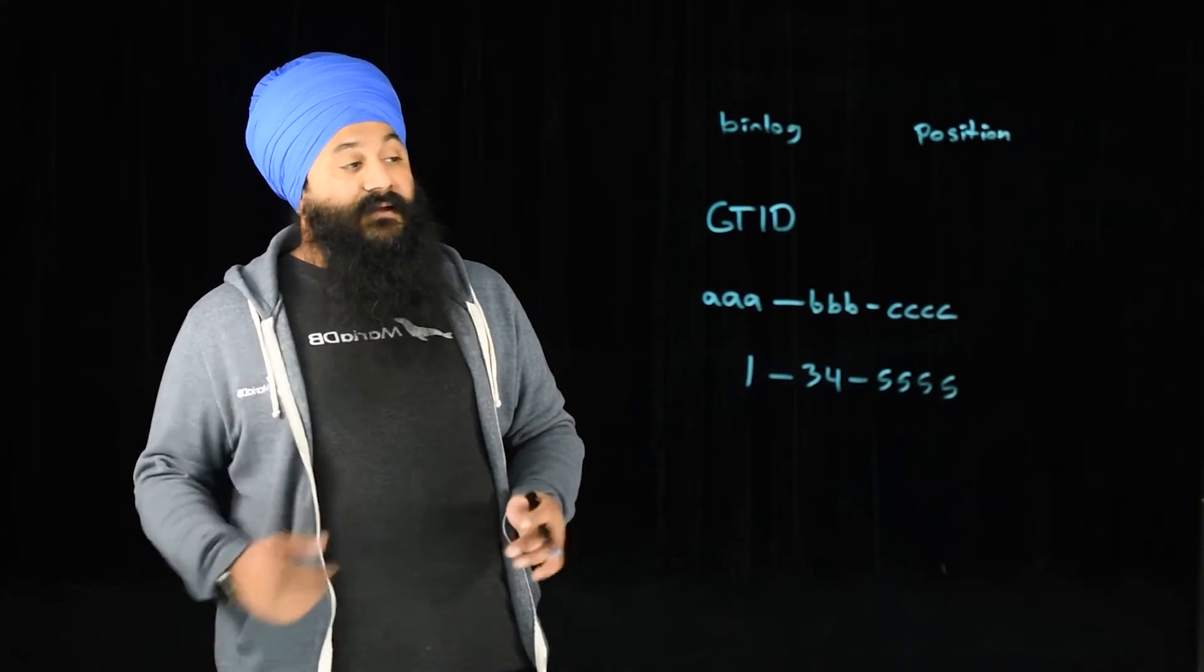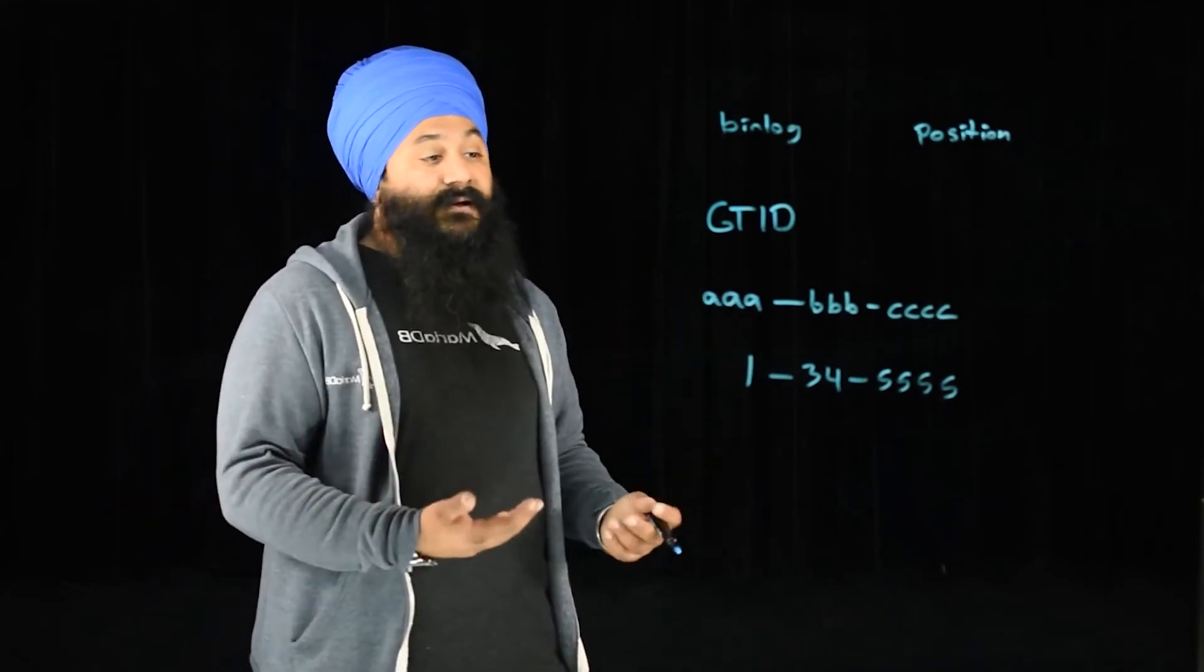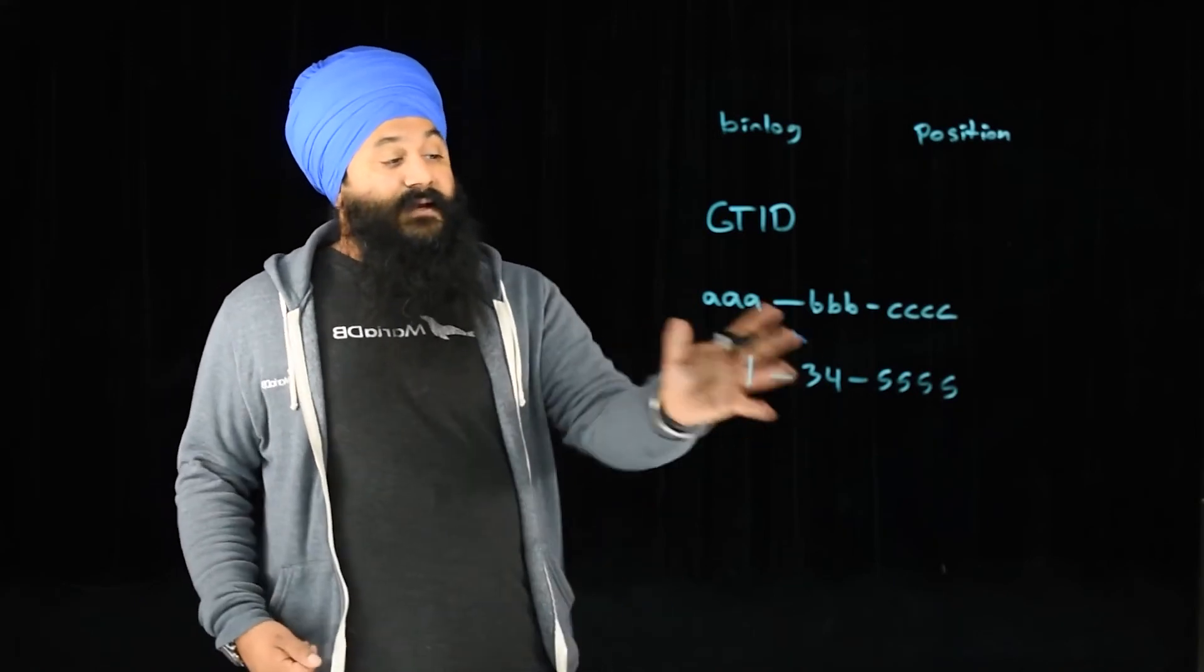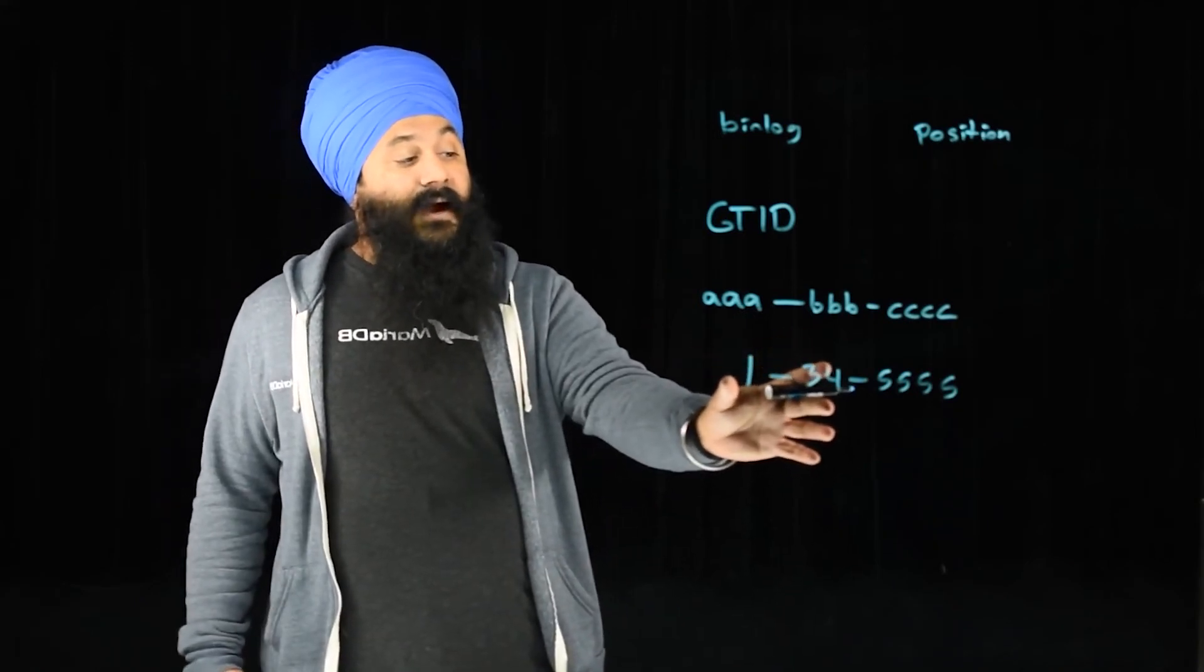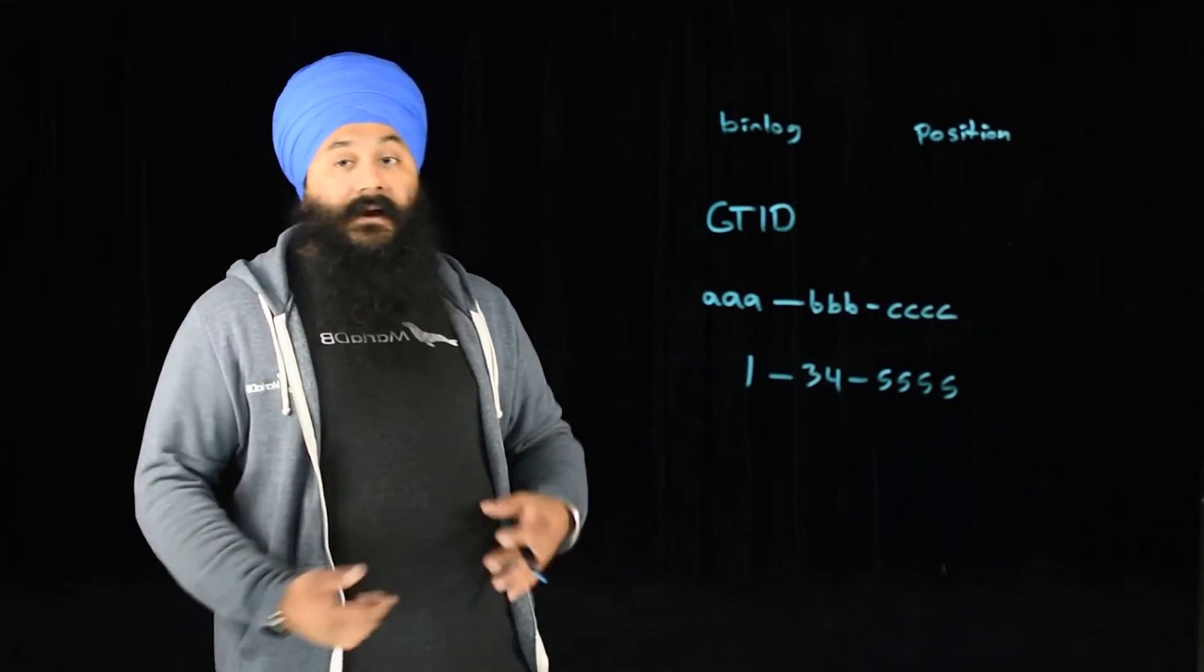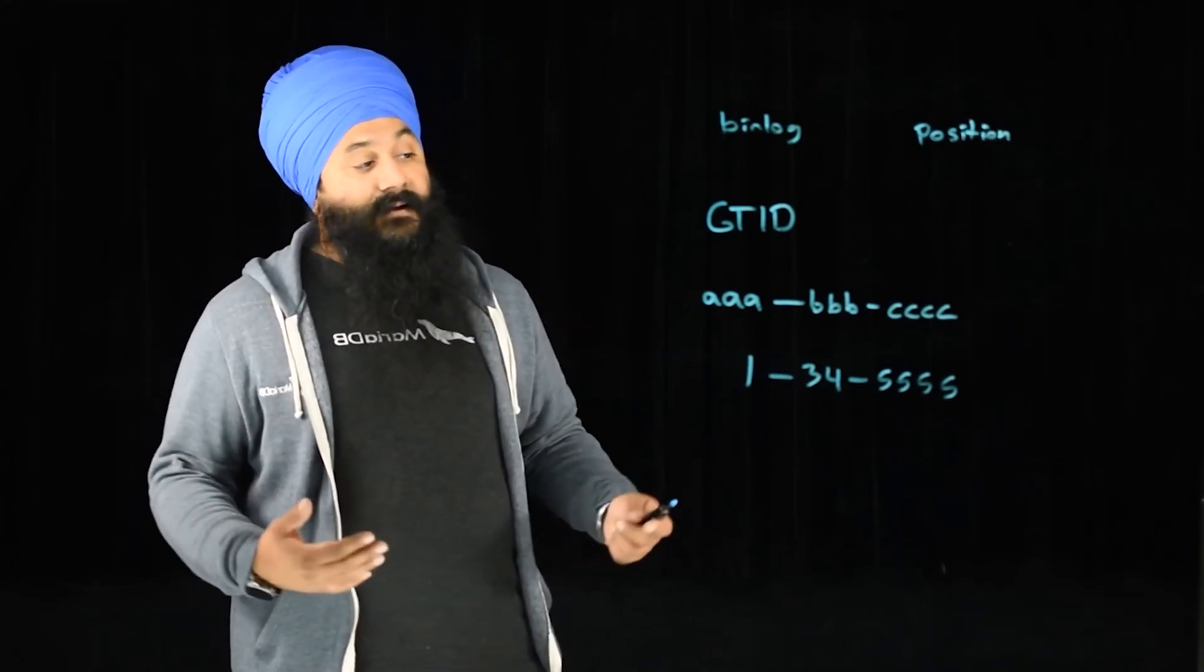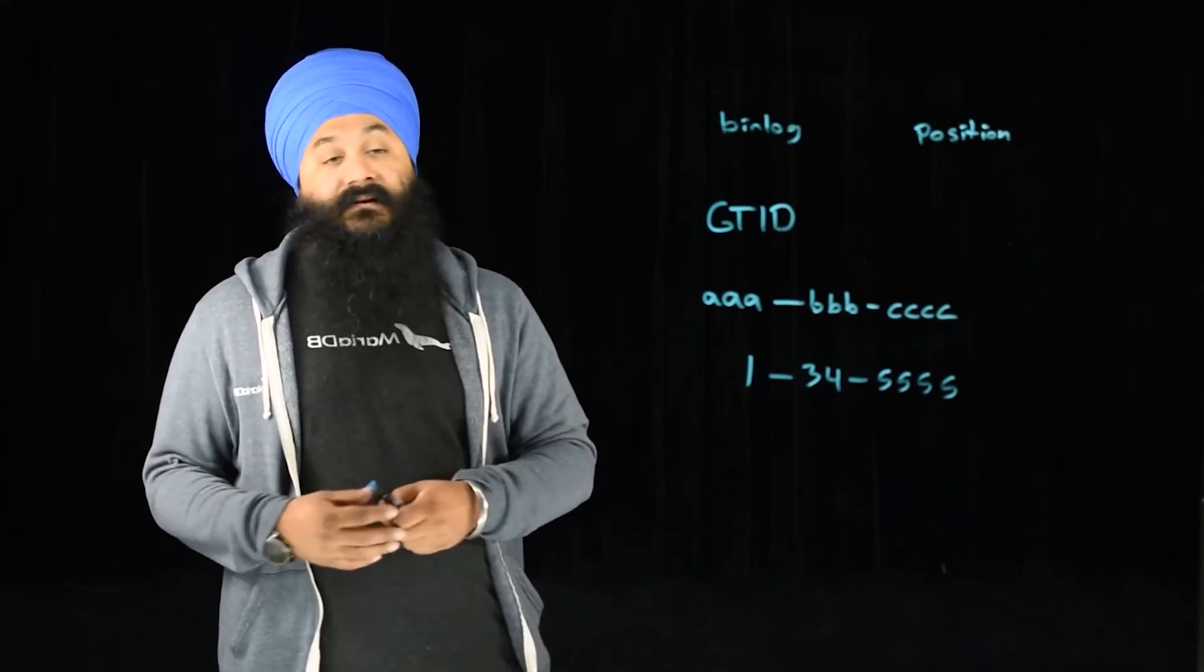What we can do then is if we fail over to another primary or we want to replicate from, say, a replica of a replica, we can just tell it, 'I know that I'm at this GTID, what's the next GTID?' And its primary will provide that to it for replication.